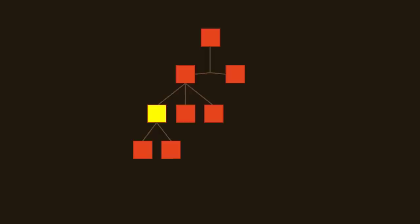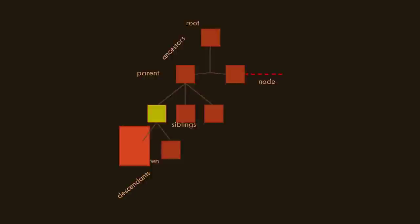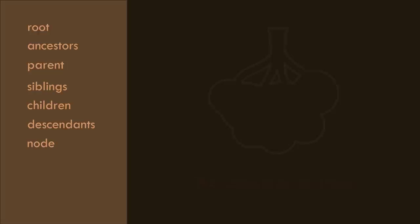We use these exact same terms when talking about tree data structures. So a particular item in the tree has siblings, children, a parent, ancestors, a root, etc. A particular item in the tree is called a node. So a node of the tree has siblings, a node has children, a node has a parent, and so on. All of these terms we will see again, and they're fairly self-explanatory. You're already speaking like a computer scientist - you're speaking the language of trees.